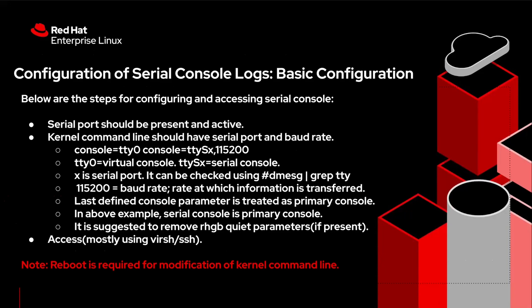Console equals TTY0 is the regular console, whereas console equals TTYSX,baud-rate is the serial console. Here X is the serial port number in TTYSX, which can be checked using the 'dmesg | grep tty' command, and 115200 is the baud rate — the rate at which information is transferred. One important thing is that the last defined console parameter is treated as the primary console.